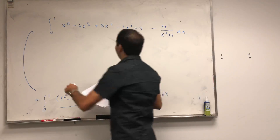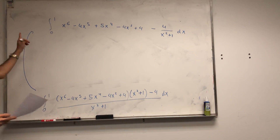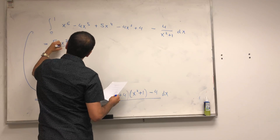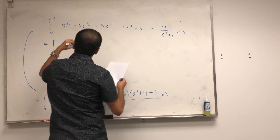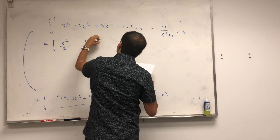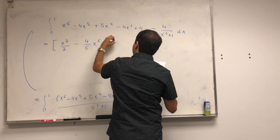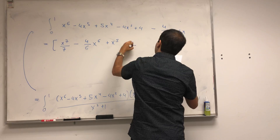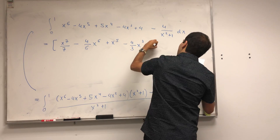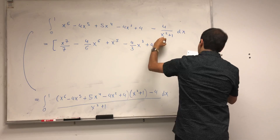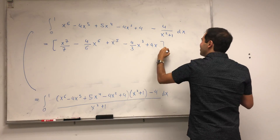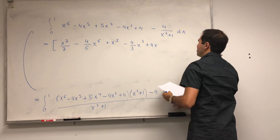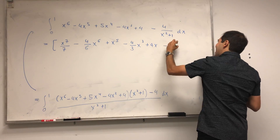Now you just integrate that. It's x to the seventh over 7, minus 4/6 times x to the sixth, plus x to the fifth, minus 4x squared over 3 plus 4x, evaluated from 0 to 1, and then minus 4 arctangent of x.